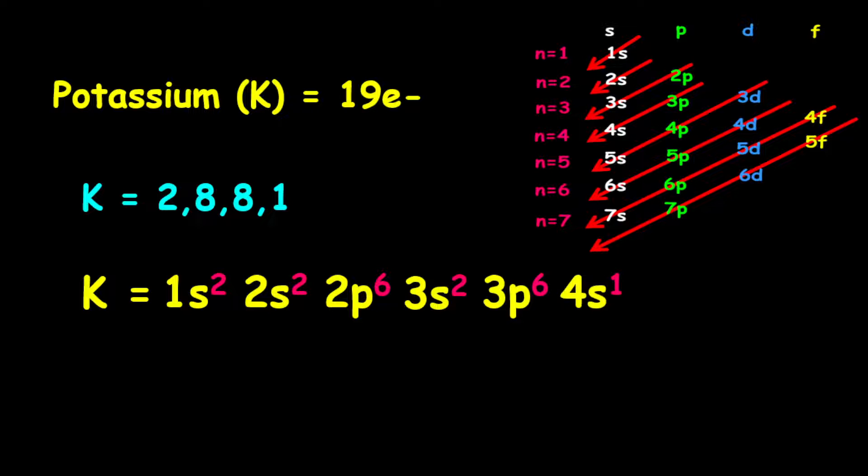Then we go to 4s1. For the shorthand electron configuration, it is given as argon. Argon represents the inner shells of potassium. Therefore, it is argon, then 4s1.